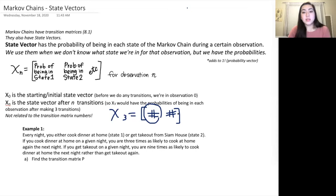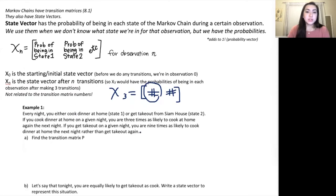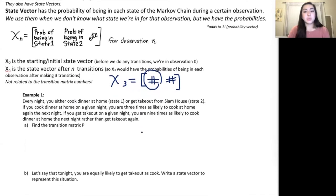Also note that the state vector entries are not related to the transition matrix numbers at all, which we'll see in this example. Every night we either cook dinner at home (state one) or get takeout from Siam House (state two). If you cook dinner at home on a given night, you are three times as likely to cook at home again the next night. If you get takeout on a given night, you are nine times as likely to cook dinner at home the next night rather than get takeout again.